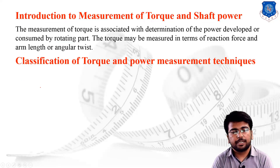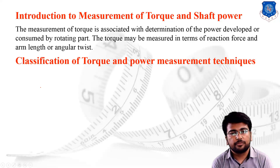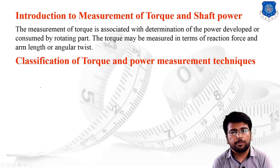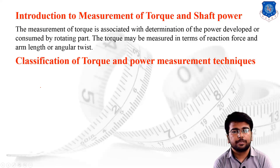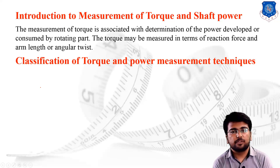Now let us discuss the classification of torque and power measurement techniques. These are classified in terms of dynamometers. The dynamometer is the instrument used for measurement of torque or shaft power — similar to how a load cell is used for force measurement. Whatever instrument is useful for measuring torque and shaft power is known as a dynamometer, and the measurement techniques depend on the type of dynamometer.